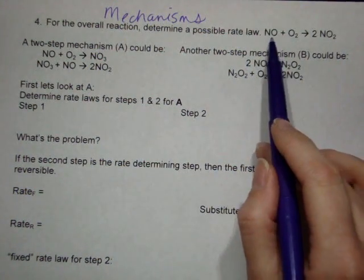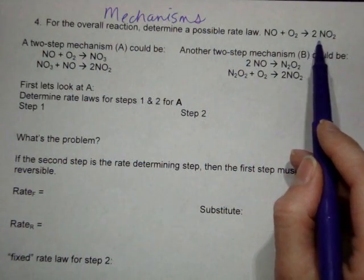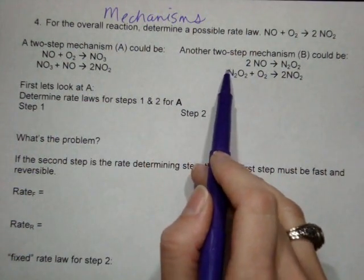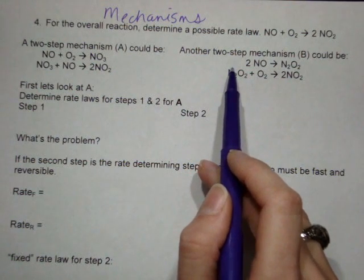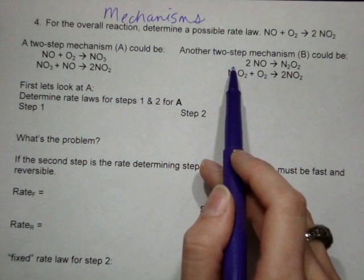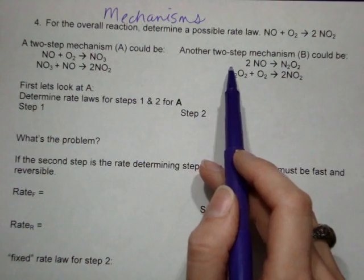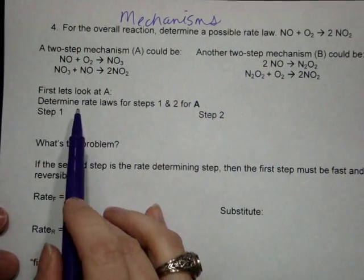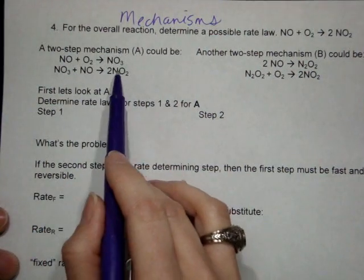We have an overall equation, NO plus O2 yields 2NO2. We have two possible mechanisms. So we're trying to analyze the mechanisms to see which ones would be feasible to come up with the rate law and what that rate law would be. So first of all, let's look at mechanism A.